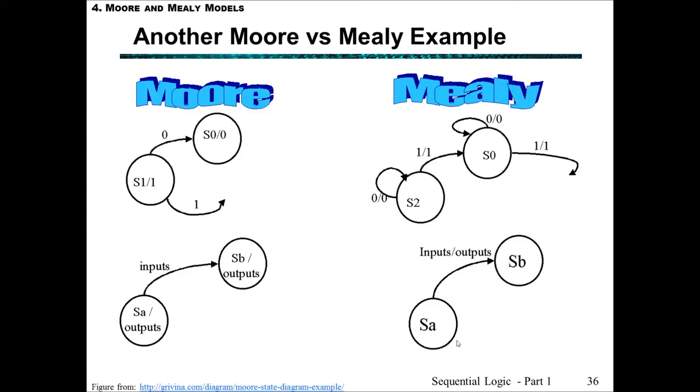Here's another diagram of Moore versus Mealy, if you haven't quite got it yet, showing Moore with state 1 giving an output of 1, state 0 giving an output of 0, shows state A and outputs, state B and outputs, inputs are on the arc. For the Mealy case, we just have state 0, state 2, for example, and then we have the input slash the output, input slash the outputs on the arcs in between the two states.